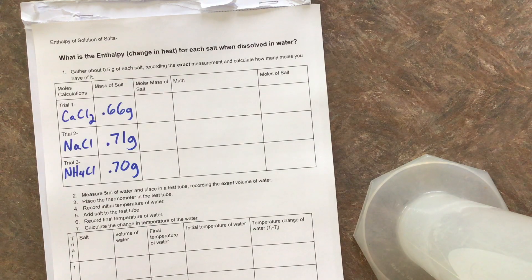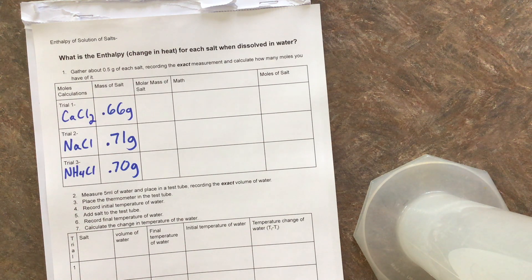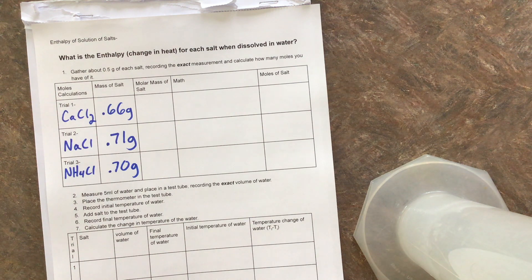You see it was supposed to be about 0.5, in all cases it was over. That's okay, we're keeping track of that mass. Next, let's go ahead and figure out the molar mass of the salt, and then use our math to figure out how many moles of salt we actually have.